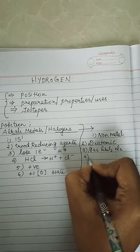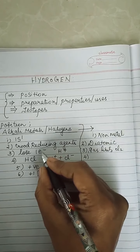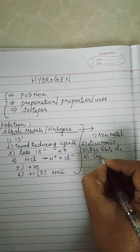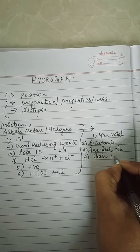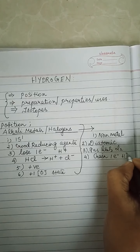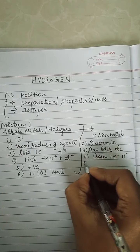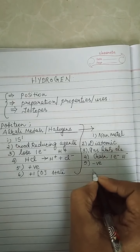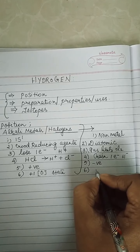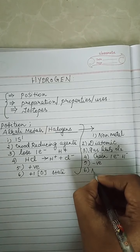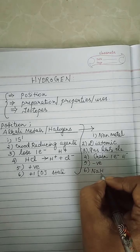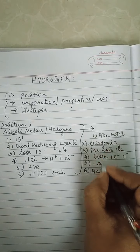Not only does hydrogen lose electrons like alkali metals, it can also gain an electron. It has the ability to gain one electron to form H⁻ ions, and it is electronegative in nature. It is also liberated at the anode during electrolysis — for example, when you electrolyze NaOH, hydrogen is liberated at the anode. This property shows it is similar to halogens.